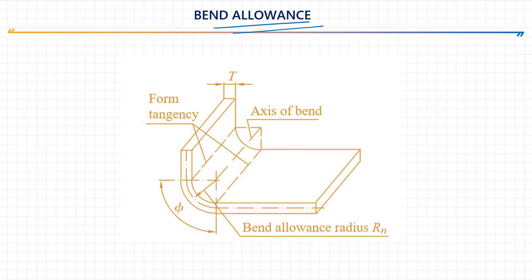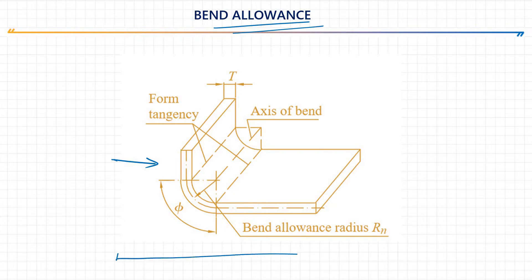Hello friends, welcome back to Industrial Learning. Today in this session I am going to discuss about bend allowance. The first question is: why are we calculating bend allowance? The answer is simple. Suppose we have a component like this with a bend, and for calculating the blank length of this bend portion we have to make one straight blank, and from that blank only we can make this bend using a bending tool.